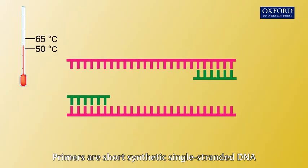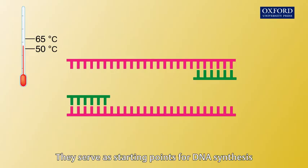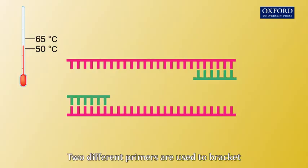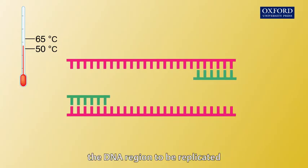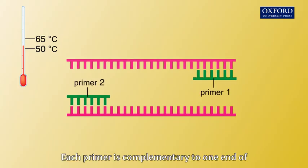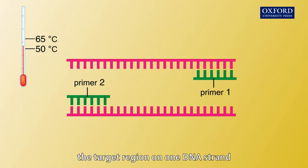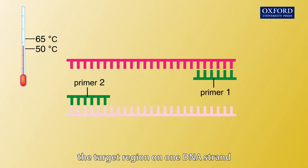Primers are short synthetic single-stranded DNA. They serve as starting points for DNA synthesis. Two different primers are used to bracket the DNA region to be replicated. Each primer is complementary to one end of the target region on one DNA strand.